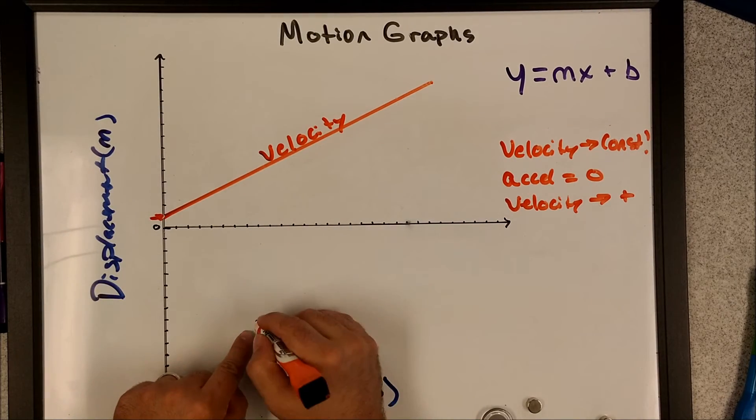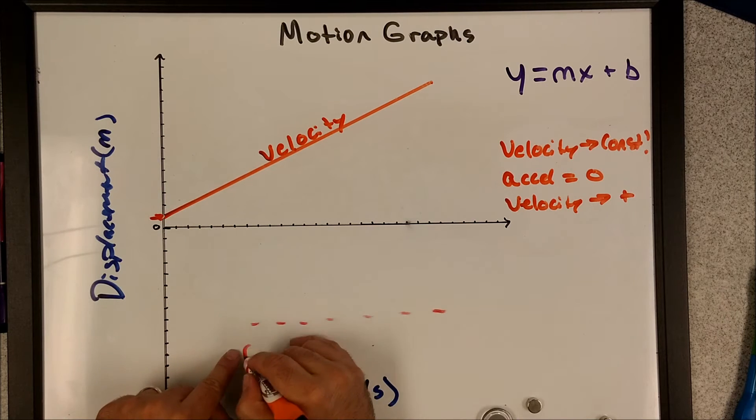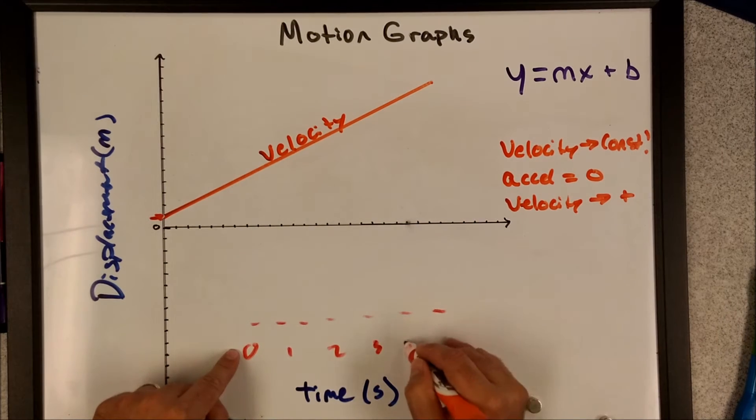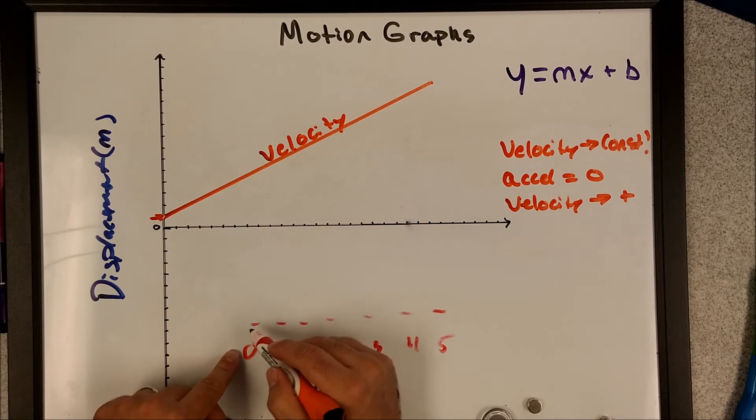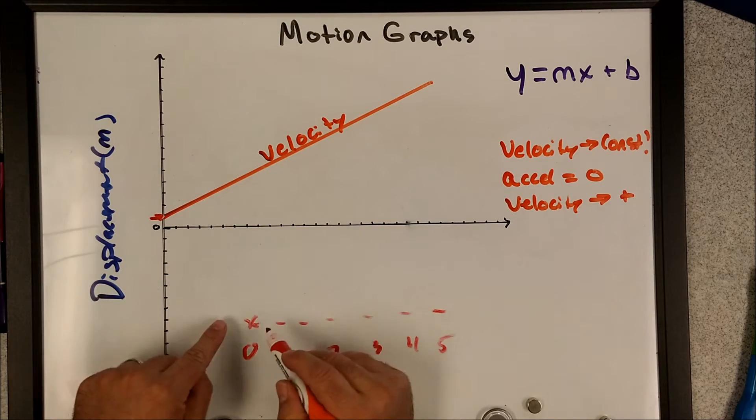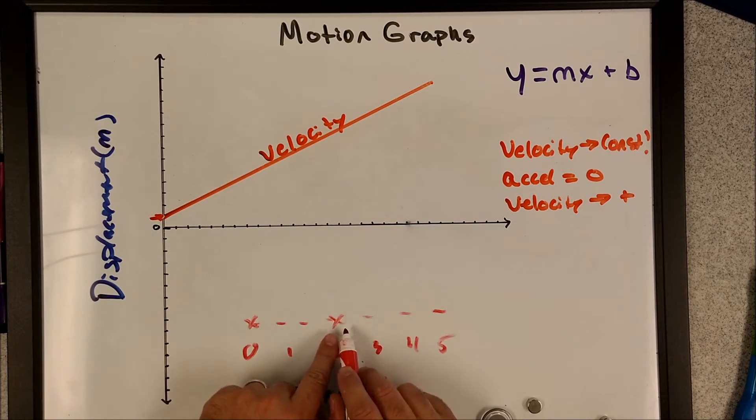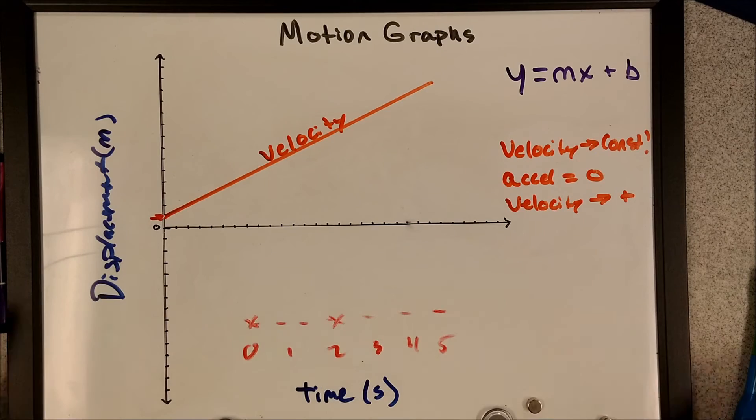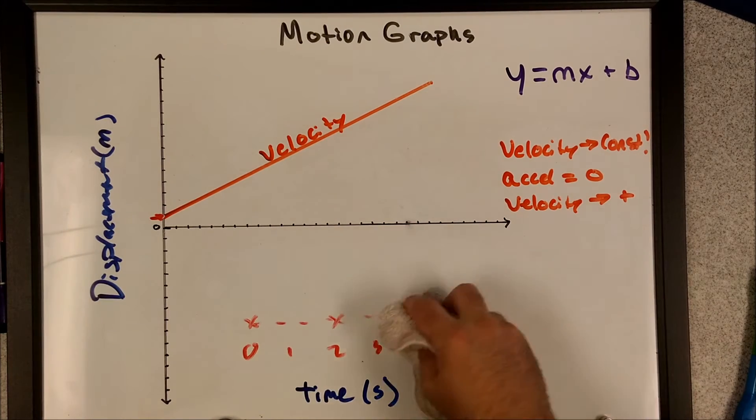Okay, so if the object started, if I were to do a position timeline, zero, one, two, three, four, all the way down, just tossing random numbers in here. If the object started here, then I would plot it at zero. But in this case, the object started at a non-zero spot. That's why it was up here. Okay, let me erase this board and let's go through a couple other examples.